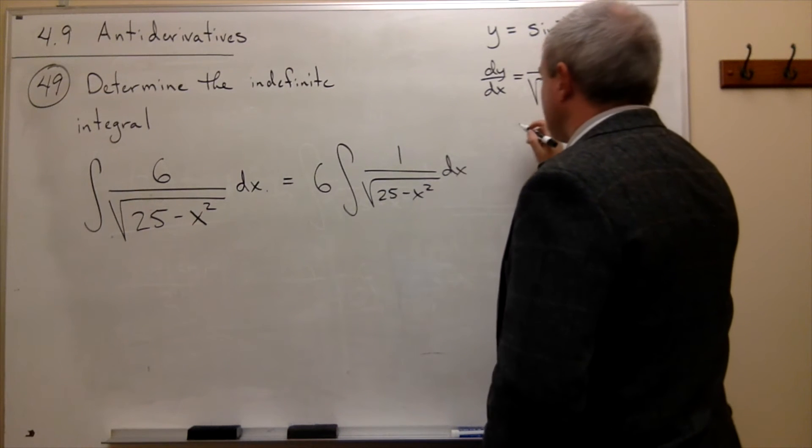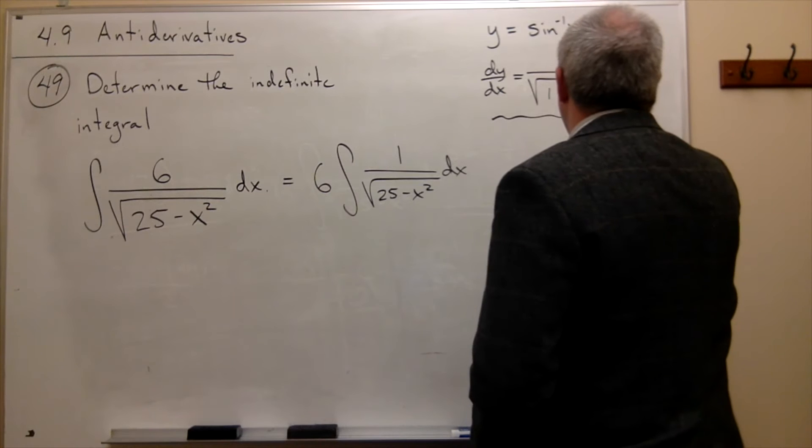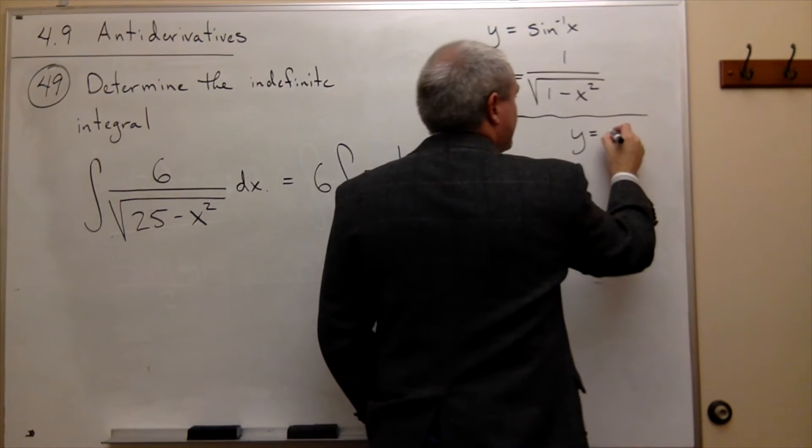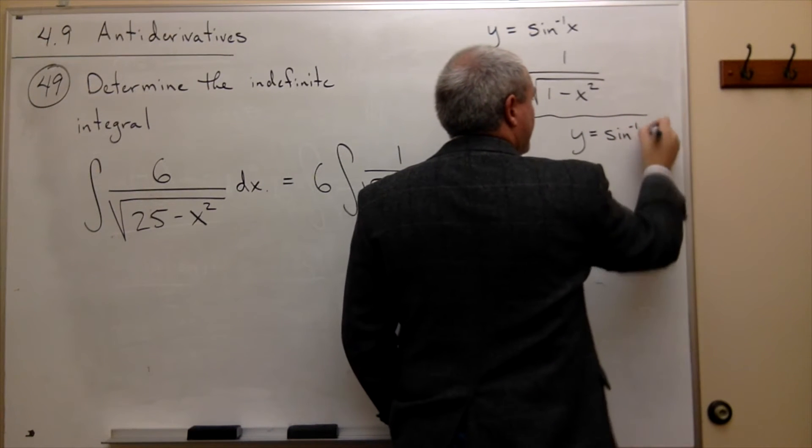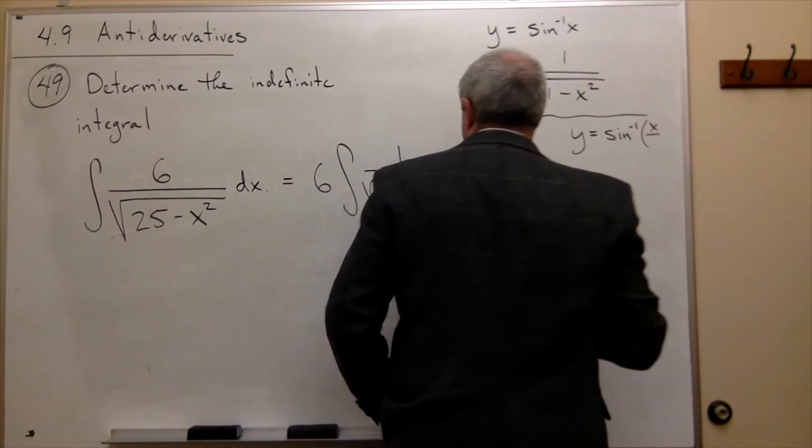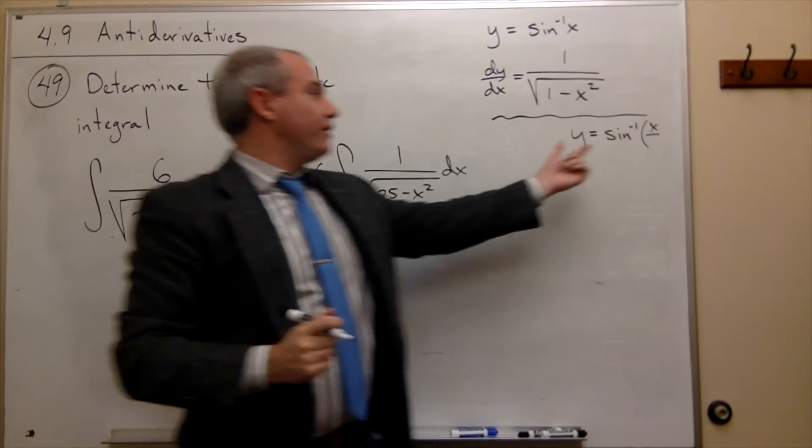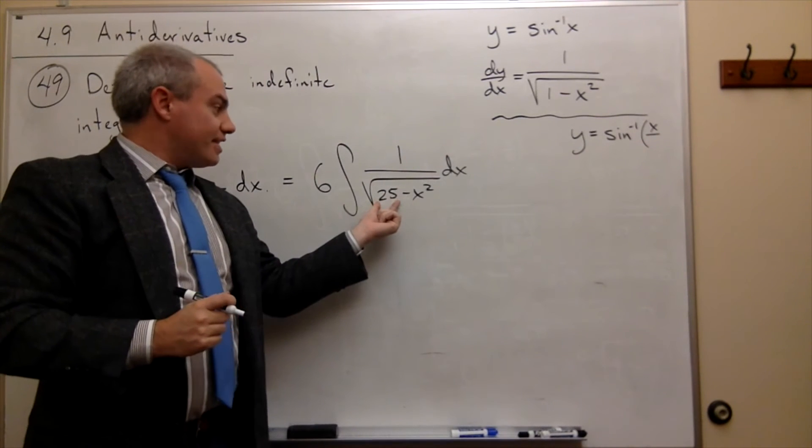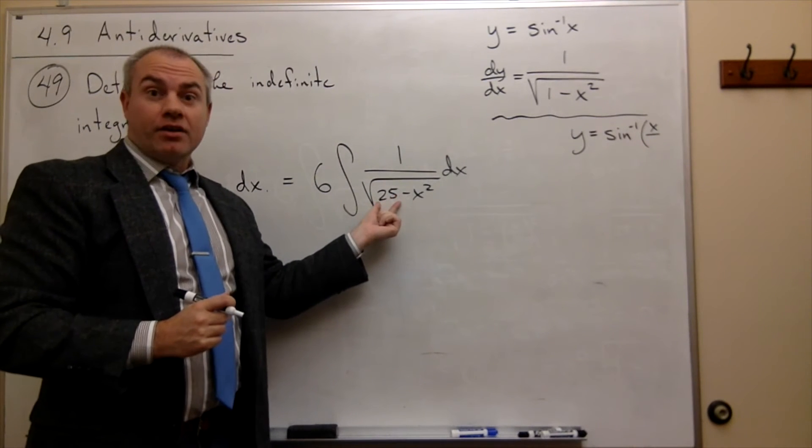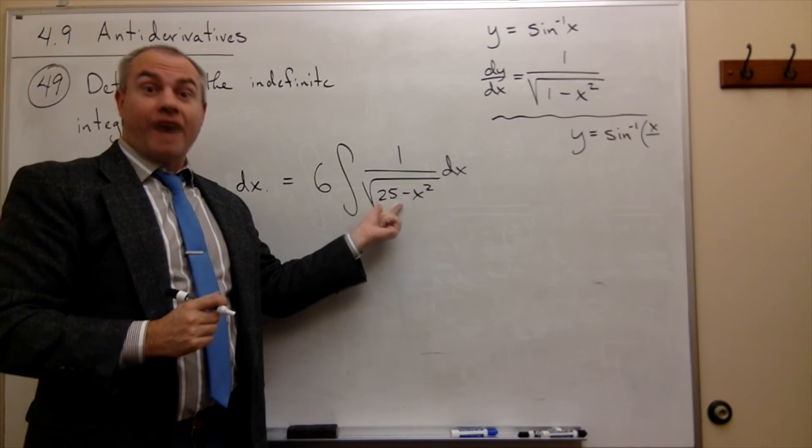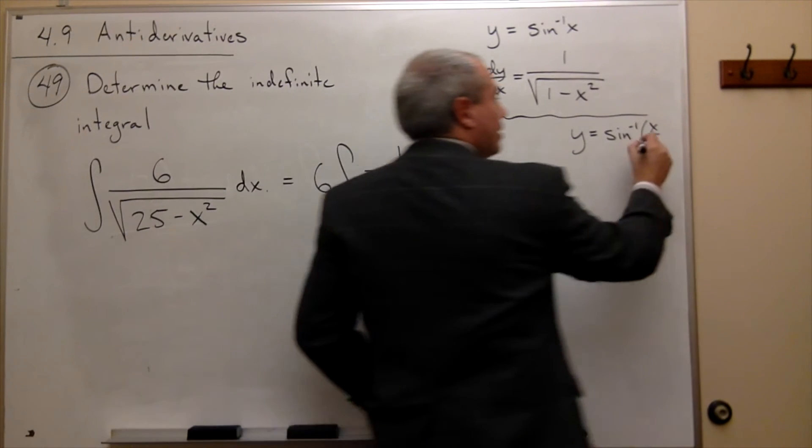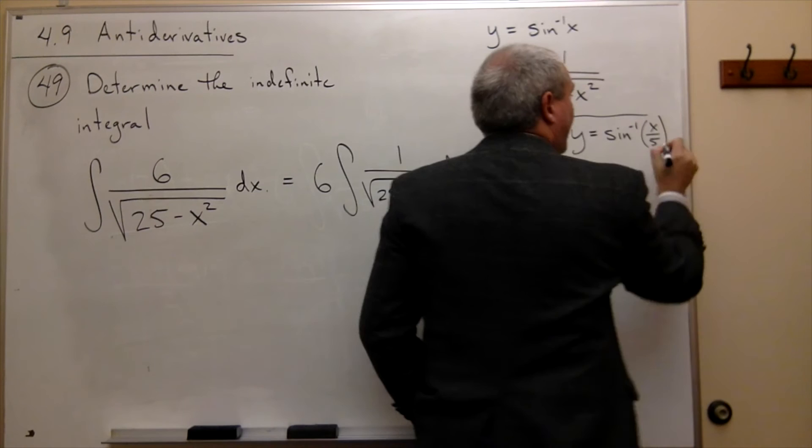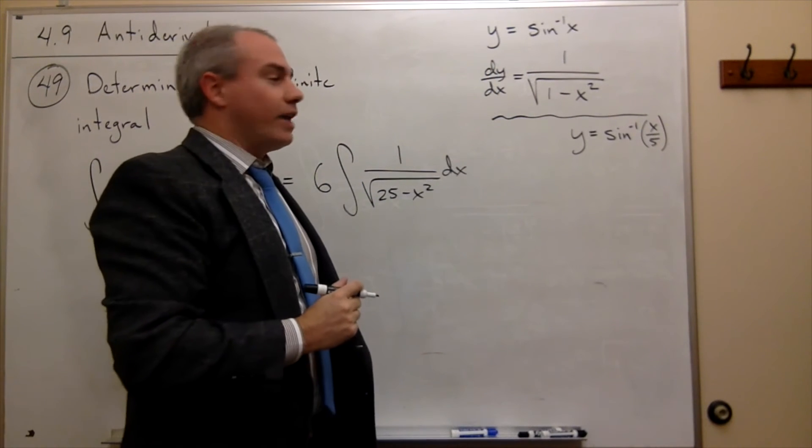what if we had y is equal to sine inverse of x over... well, I know when I take the derivative, this thing gets squared. So this is a square of something. What's it a square of? 5. So I'm going to divide the x by 5, and see what happens here.